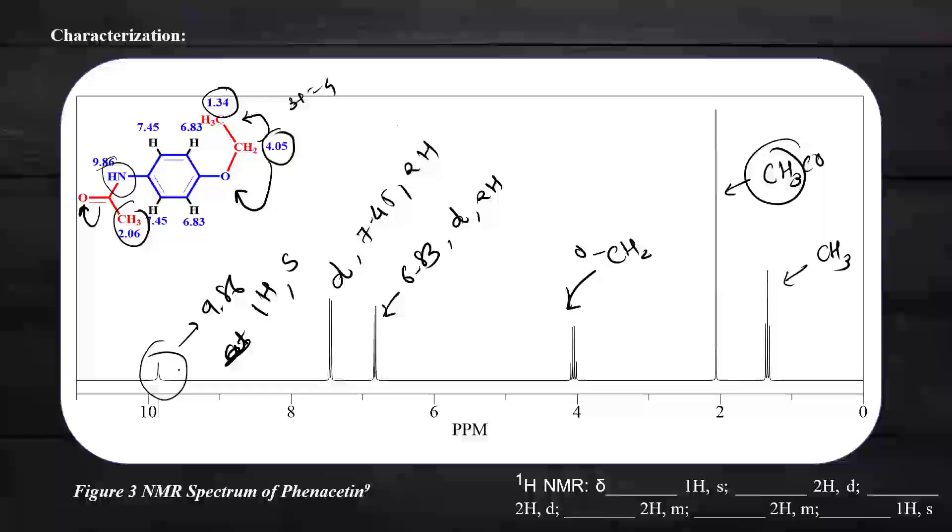Now, what is the result table? In the result table, you have to fill in all the details. Here you have to write the compound you get, the functional groups present, and the percentage yield you obtained throughout the practical. This is the reference from where I got all this information. Thank you for watching.